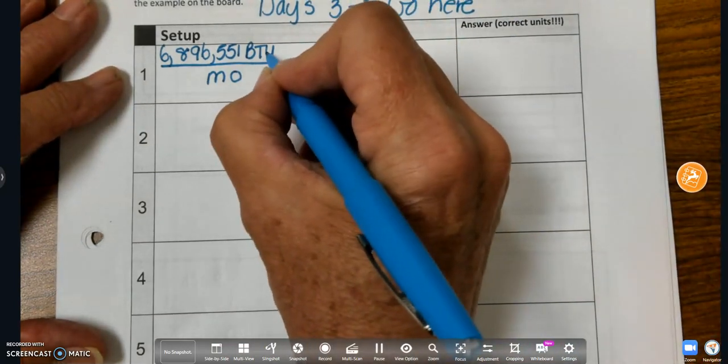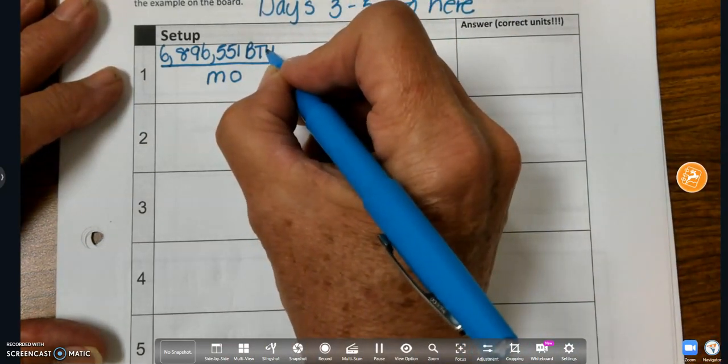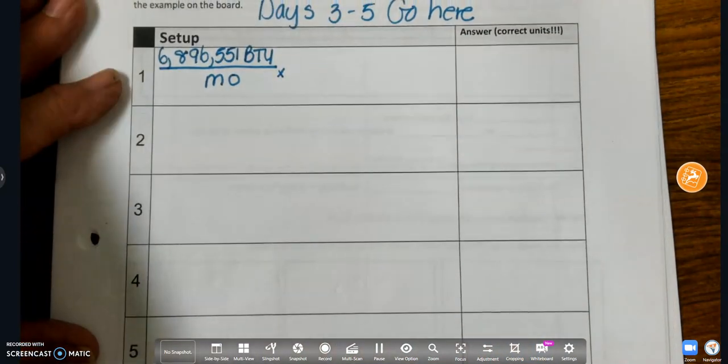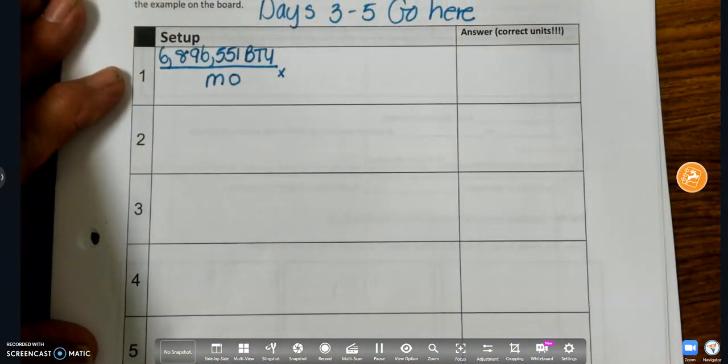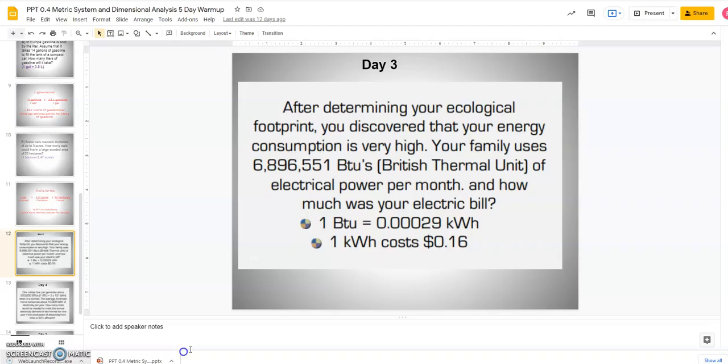Now, I don't want BTUs. I want kilowatt hours. I want dollars, right? So if you look at the problem, it says, how much was your electric bill? Which basically means I want dollars. But if you look at my conversions, I can go from BTU to kilowatt, but I do not have BTU to dollars, do I? So I'm going to have to go BTU to kilowatt, and then kilowatt to dollars.